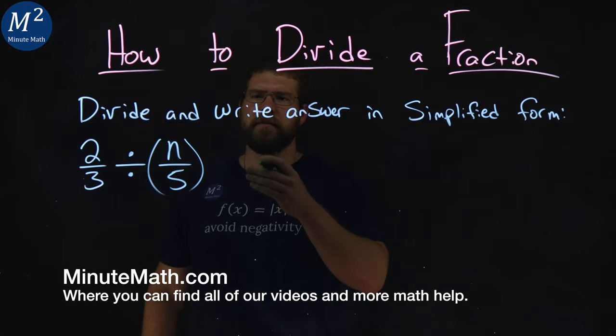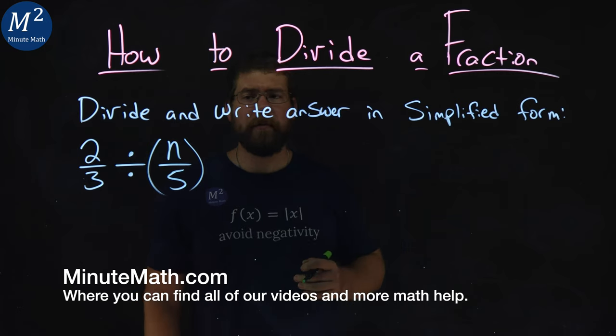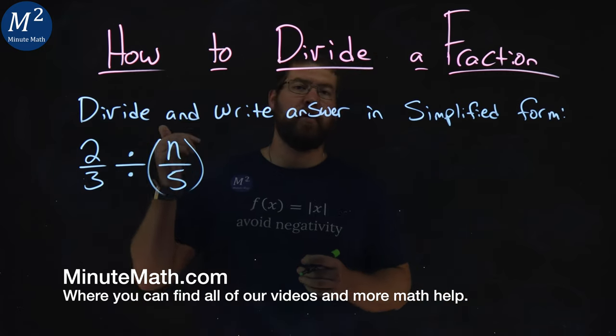We're given this problem right here: divide and write answer in simplified form of two-thirds divided by n over five.